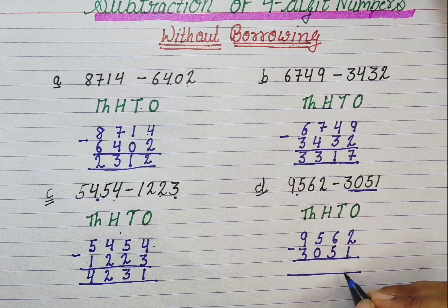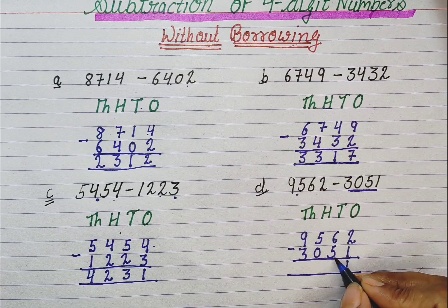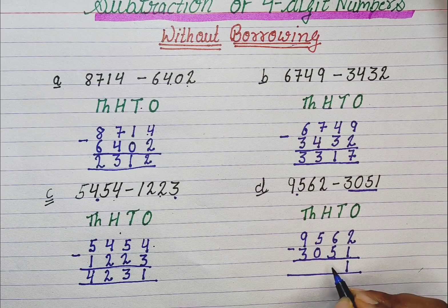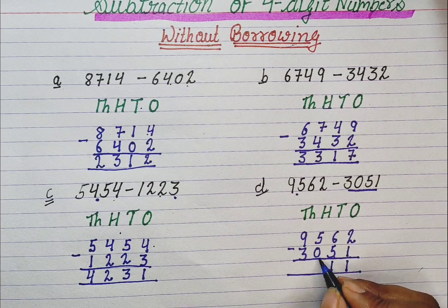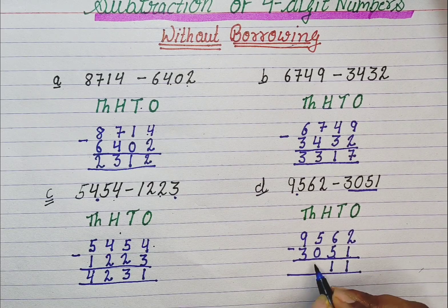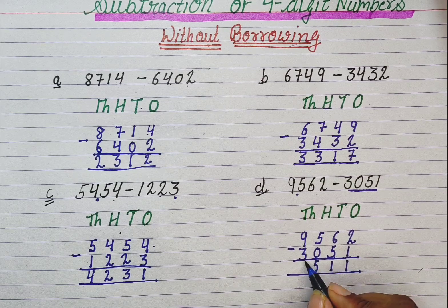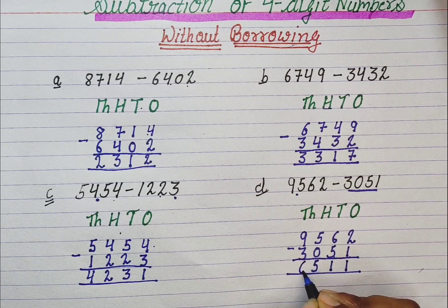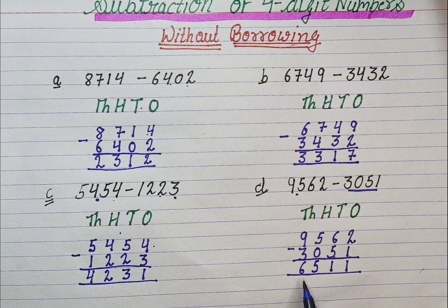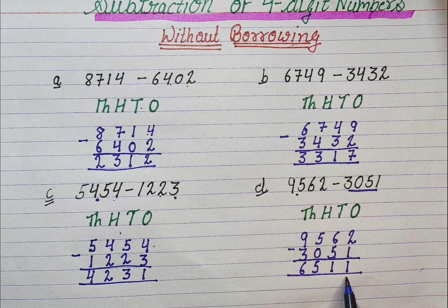2 minus 1 is 1. 6 minus 5 is 1. 5 minus 0 is 5. 9 minus 3 is 6. So the answer is 6511.